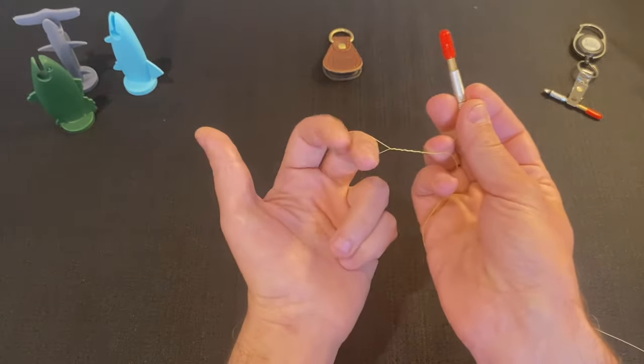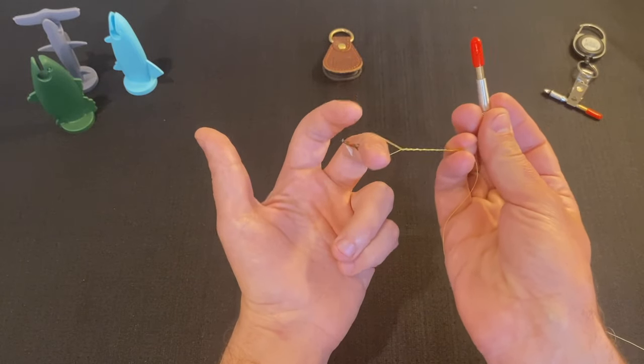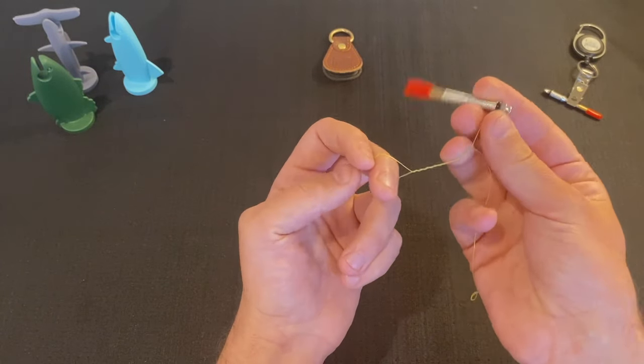Then I take the knot needle and leave tension by pulling slightly on it so it doesn't come off the bend of the hook.